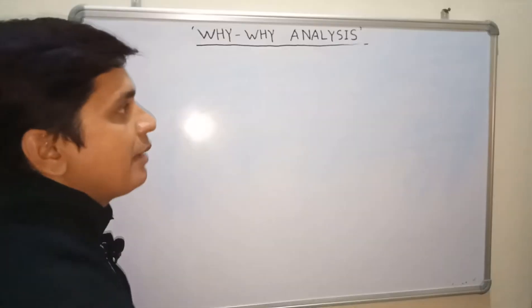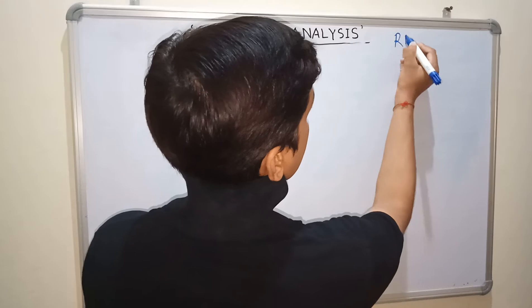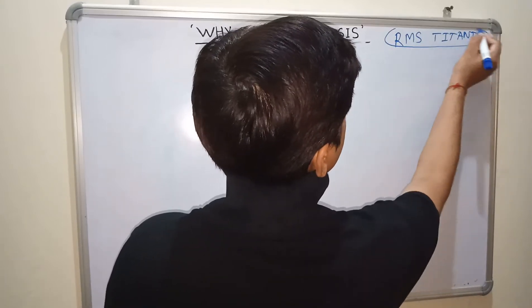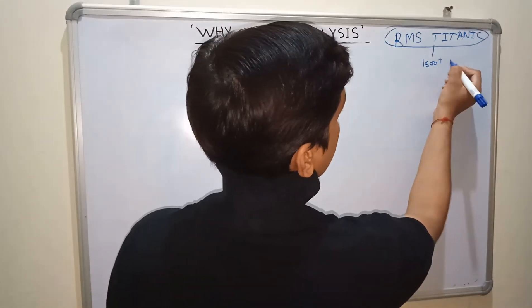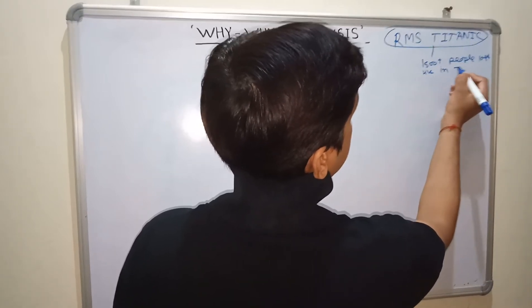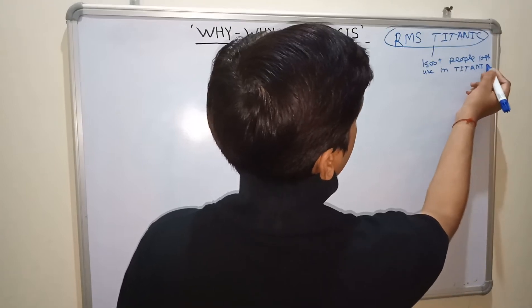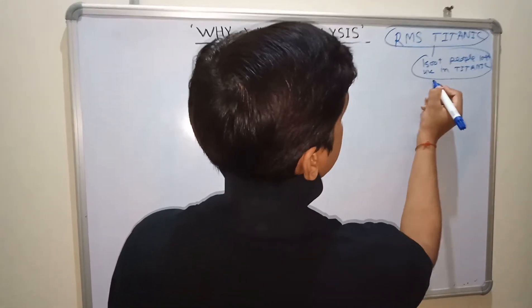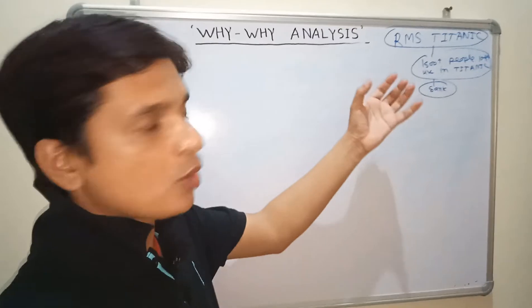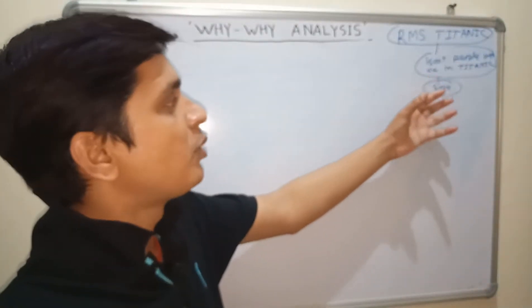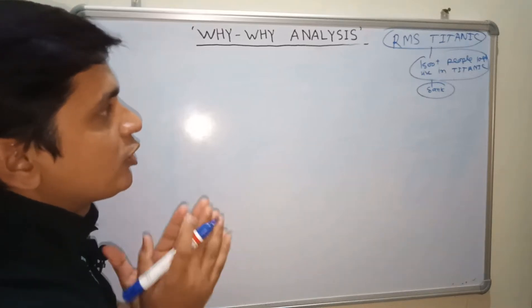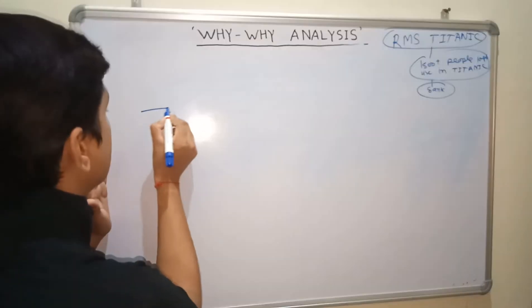I'll discuss Why-Why Analysis with a case study. I'm taking the example of RMS Titanic — why 1,500-plus people lost their lives in the Titanic. On the basis of Why-Why Analysis, how do we find the root cause of the problem — why RMS Titanic sank? My first question is: why did 1,500 people lose their lives in RMS Titanic?